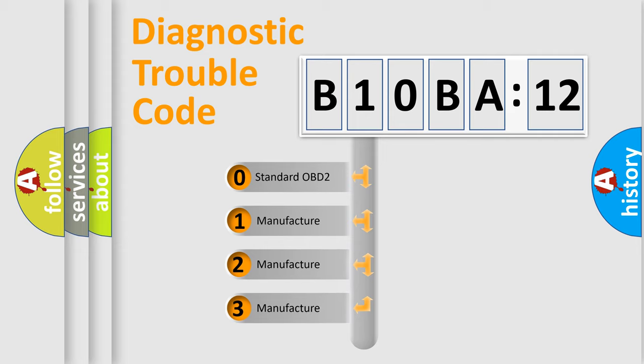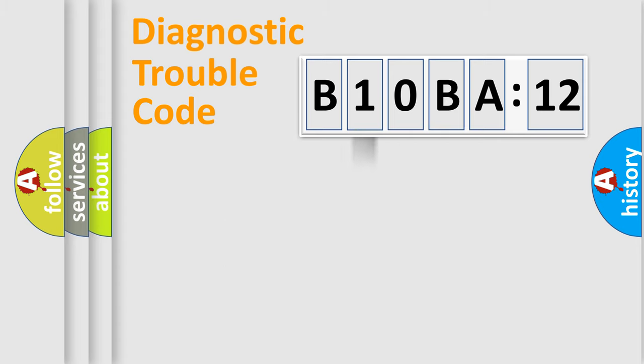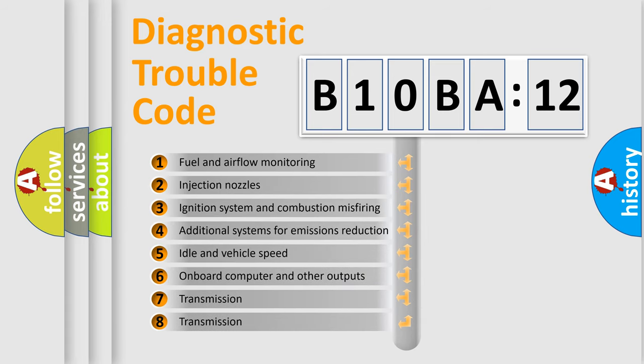If the second character is expressed as zero, it is a standardized error. In the case of numbers 1, 2, 3 it is a manufacturer-specific error. The third character specifies a subset of errors.